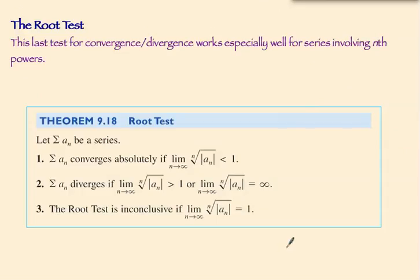Our second test is called the root test. This is the last test for convergence and divergence, and it works especially well for series involving n-th powers — because we're going to take an n-th root. The series converges absolutely if the limit, as n approaches infinity, of the n-th root of the absolute value of the n-th term is less than 1. It diverges if that limit is greater than 1 or infinity, and similar to the ratio test, the result is inconclusive if the limit is 1.